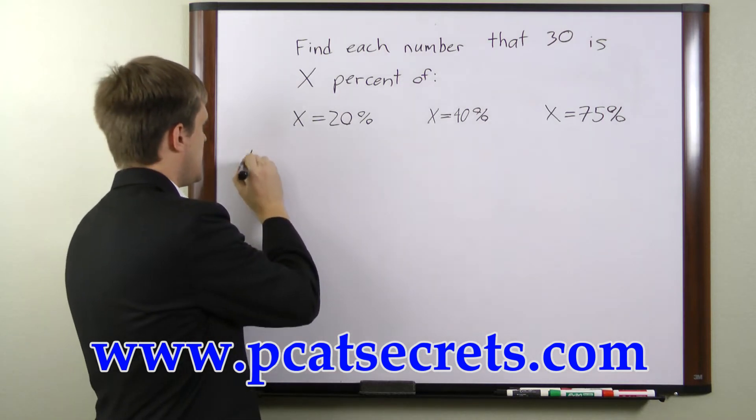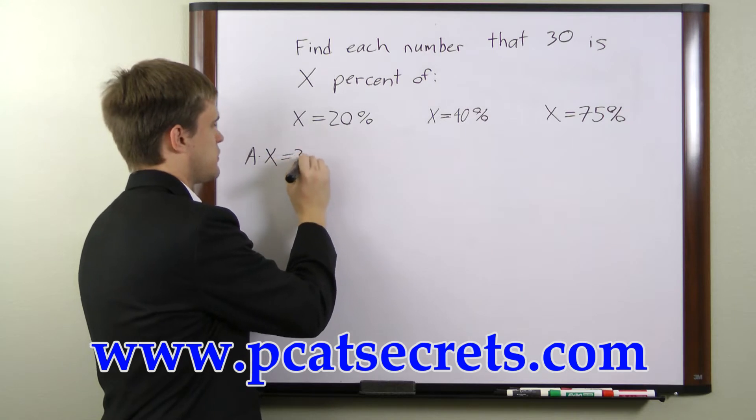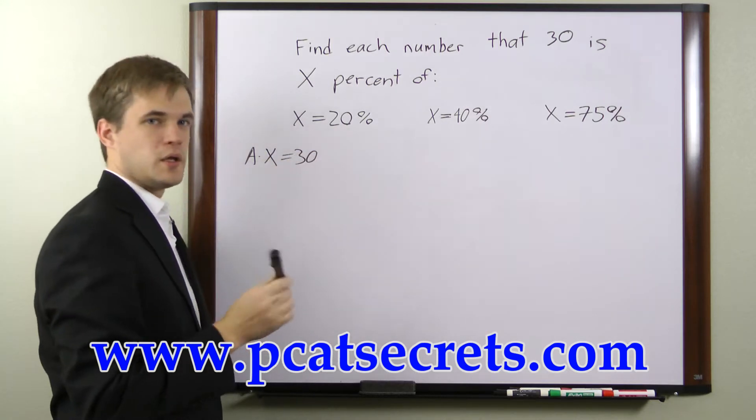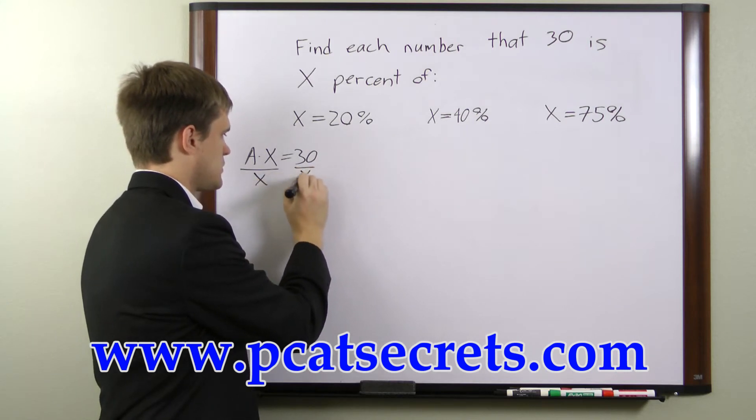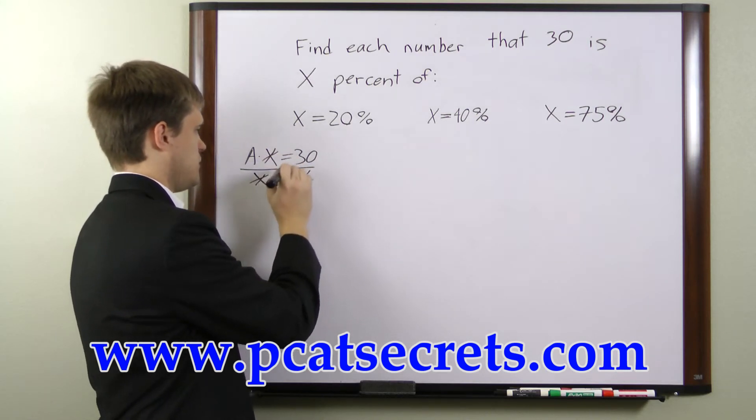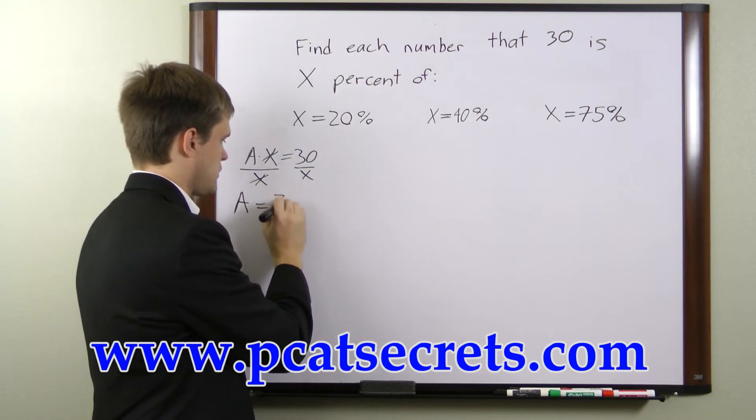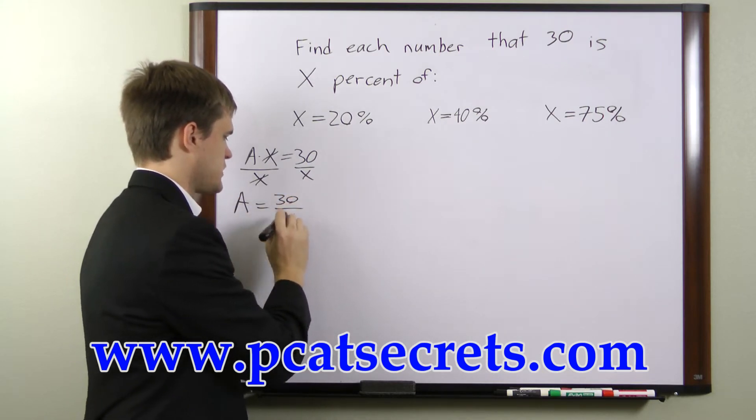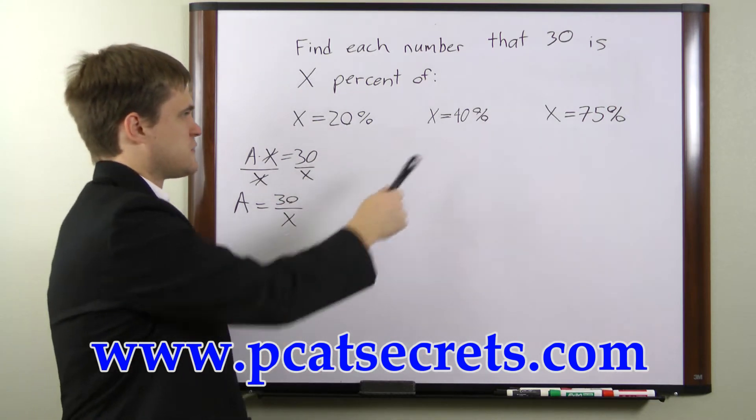We can say that a times x percent is equal to 30. We can simplify this by dividing both sides by x. The x's on this side cancel and that leaves us with a equals 30 over x percent. That's the formula we'll be using to find a for each of these values of x.